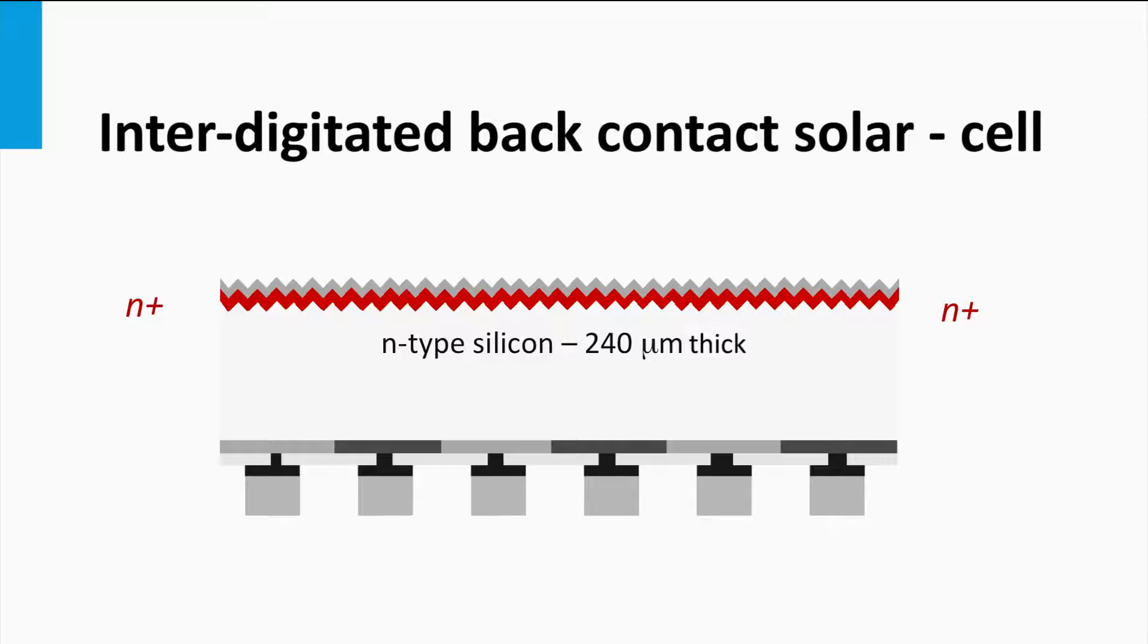The surface recombination velocity of the front surface is determined by the minority charge carriers, in this case the holes. Consequently, we have to create a front surface field.